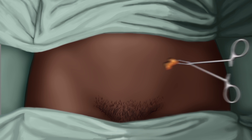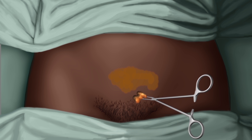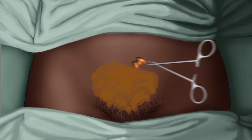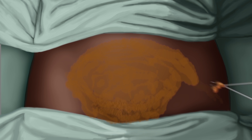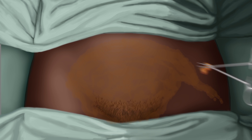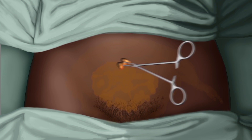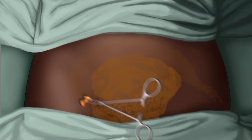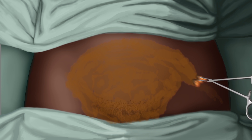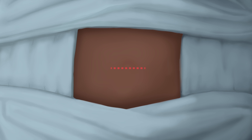Prep the incision site by swabbing the abdomen twice with iodine antiseptic. Lay down sterile drapes and create a sterile field.